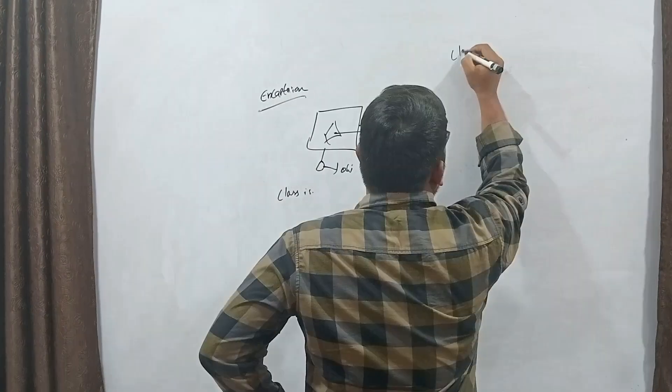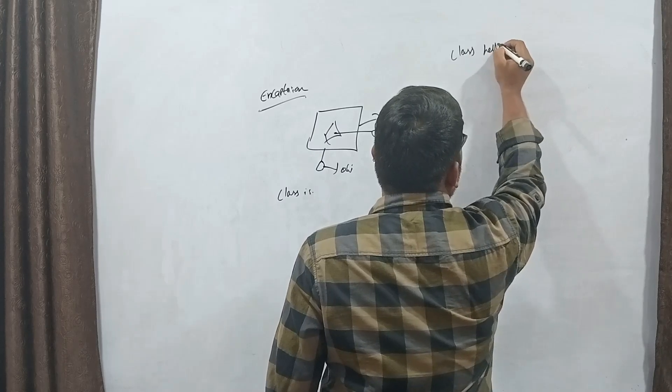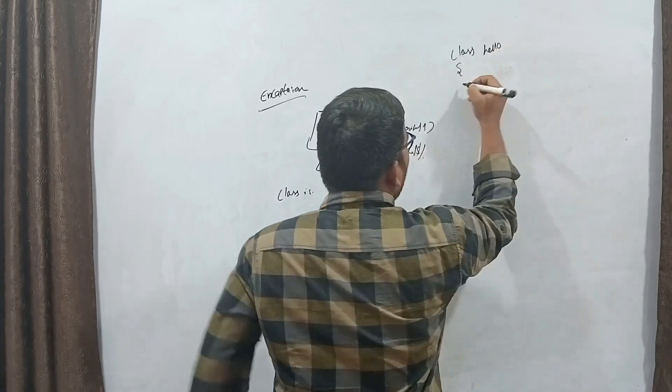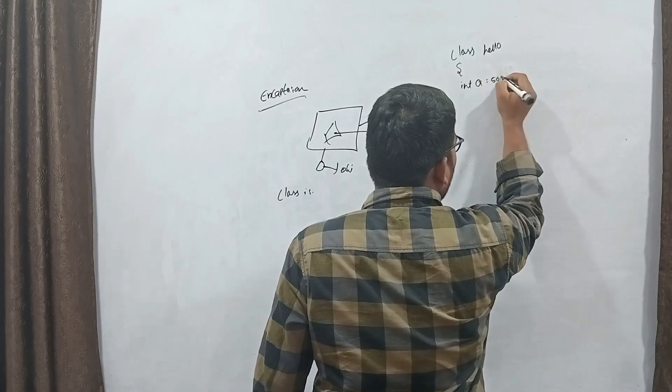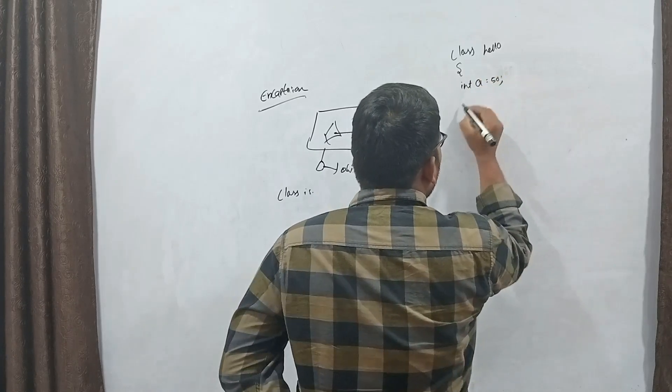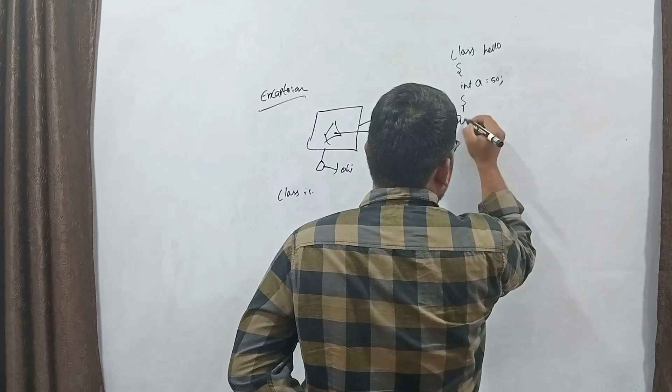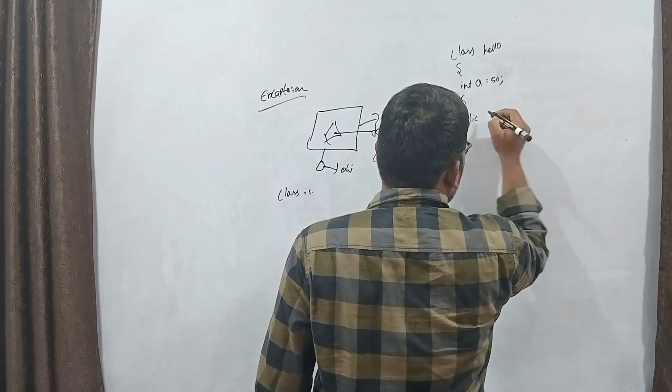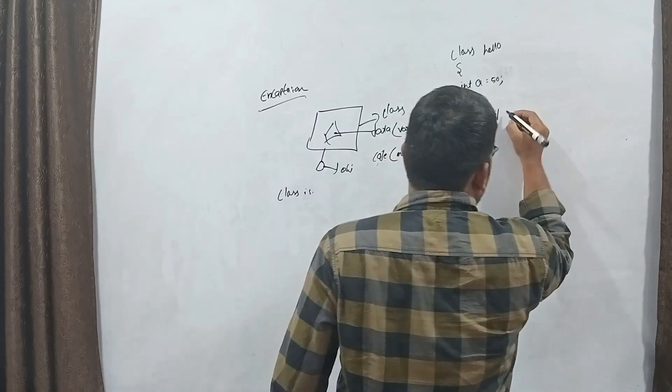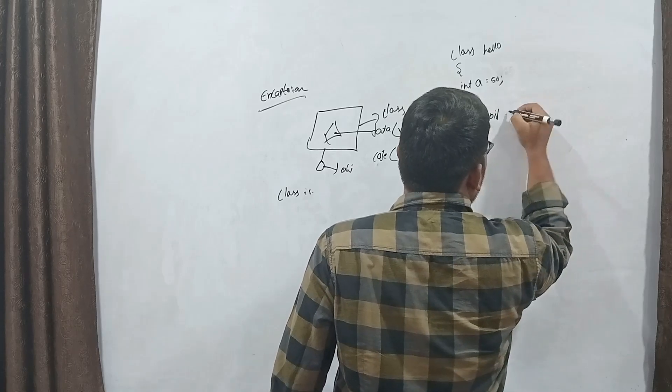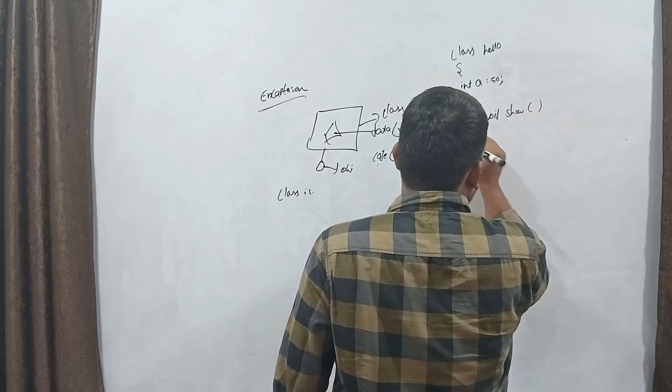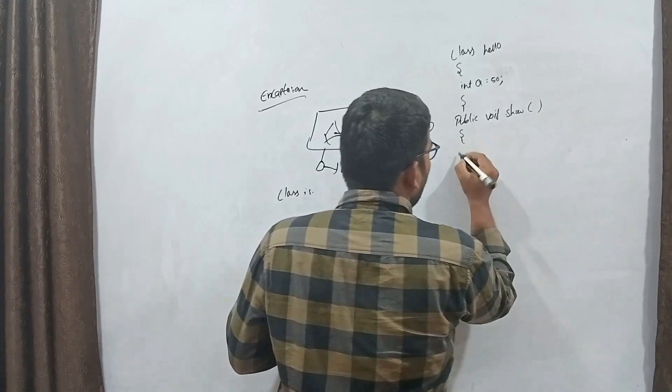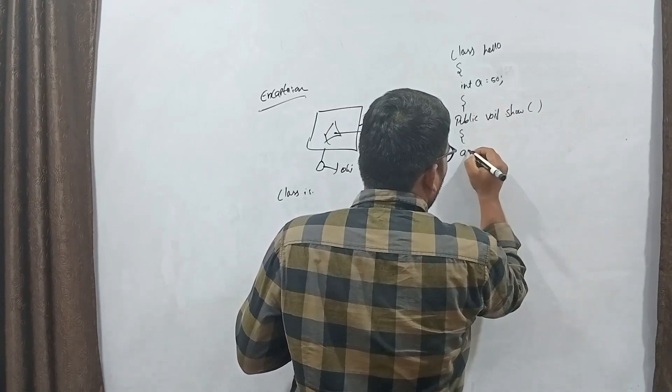Example: class hello. Age equals 50. I will write method. Method is stroke. Increment operator.